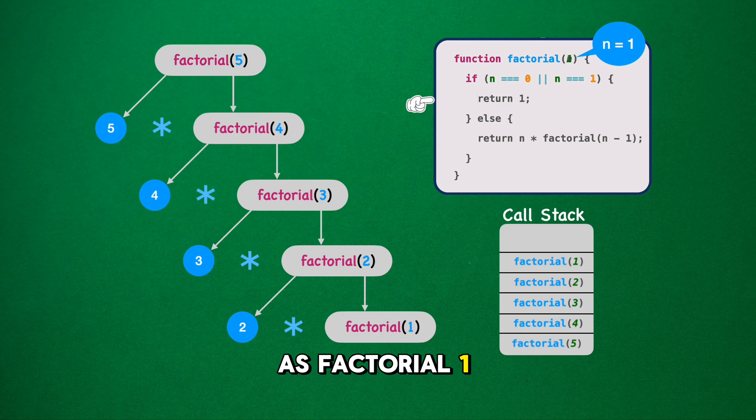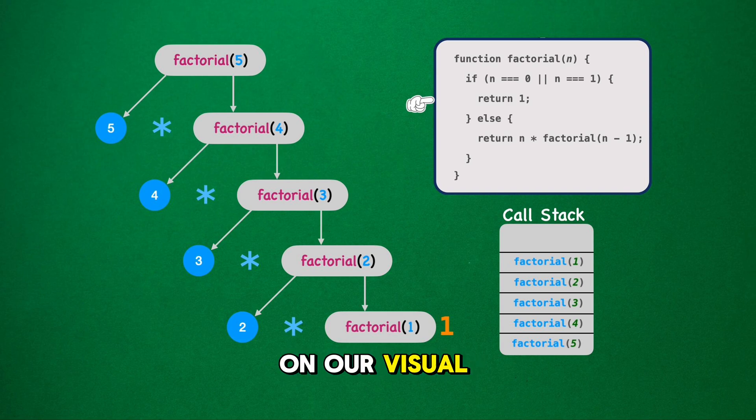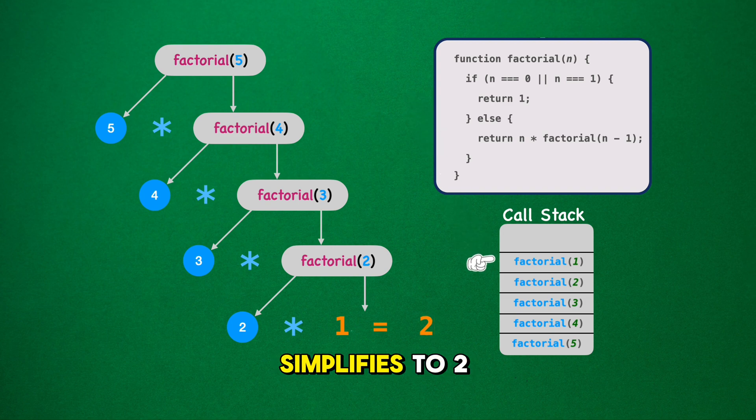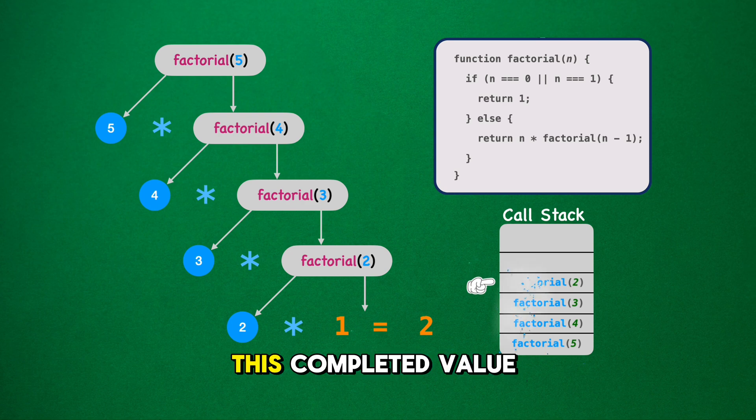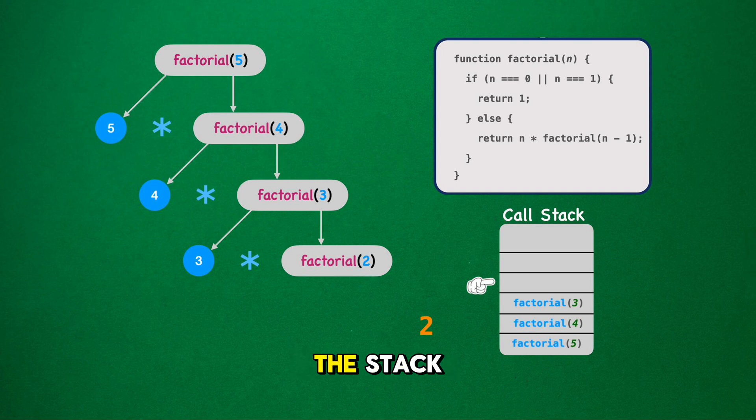As factorial 1 returns 1, the stack begins to unwind. We start with factorial 2. On our visual board, we see 2 asterisk factorial 1. Since factorial 1 returned 1, we can now replace it with its result. So factorial 2 simplifies to 2 asterisk 1, which resolves to 2. This completed value of factorial 2 is now ready to be used by the next call in the stack.